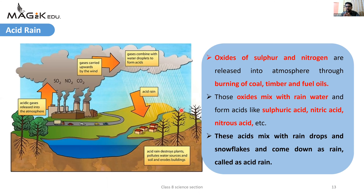Air pollution ka aur ek effect hota hai - acid rain. Acid rain kya hai? Oxides of sulfur and nitrogen are released into the atmosphere through burning of coal, timber and fuel oil - human activities ke wajah se. Human bahut se kaam karte rehte hain jiske wajah se oxides of sulfur and nitrogen atmosphere mein release ho jaate hain. Ab yeh jo oxides of sulfur and nitrogen hote hain, woh upar jo clouds hote hain jismein rain drops hote hain - us rain water ke saath mix ho jaate hain aur sulfuric acid, nitric acid and nitrous acid bana lete hain.